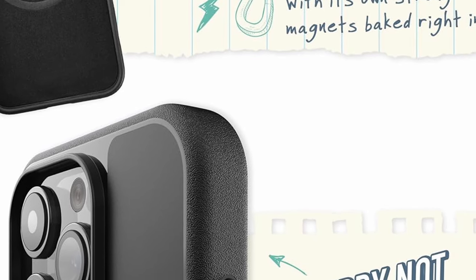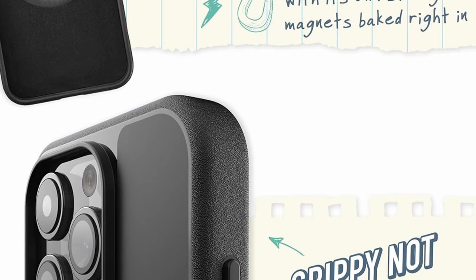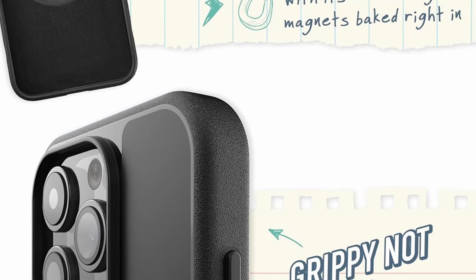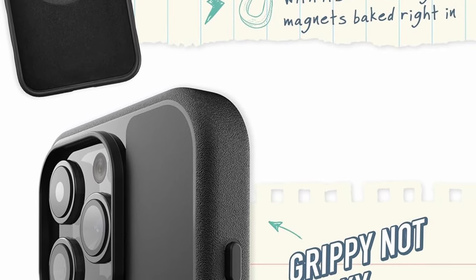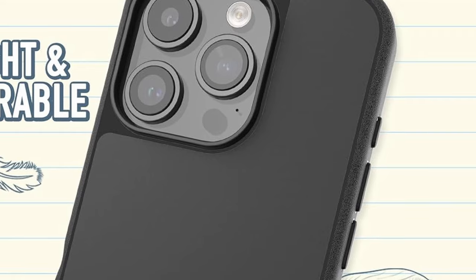Its 1mm raised border protects the camera and screen, so you can place it on flat surfaces without worrying. In order to minimize slips and pocket sticking, the smooth back and textured sides provide a firm grip, while the finger grooves improve ergonomic comfort.